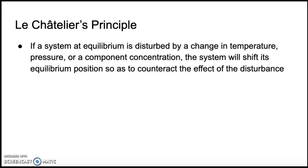Le Chatelier's Principle talks about what happens when you do something to disturb an equilibrium — if you do something to change the system at equilibrium. What happens is that if you have a system at equilibrium and you do something like change the temperature, the pressure, or the concentration of a reactant or a product, the system is going to shift its equilibrium position to counteract the effect of the disturbance. Whatever you do to the reaction, the system is going to shift to try to counterbalance or counteract that effect.